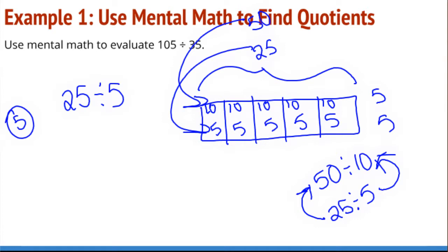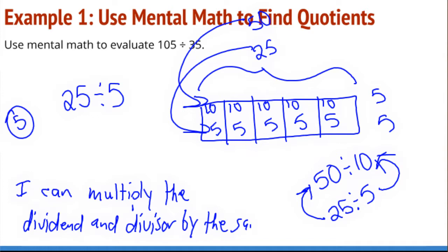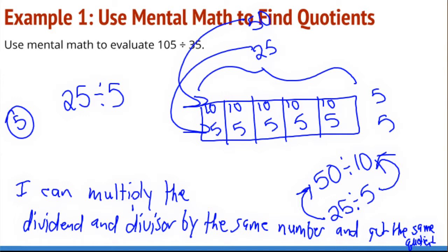So if we were to put this into a conjecture form, we would say something like: I can multiply the dividend and divisor by the same number and get the same quotient. So if I take the dividend and divisor and multiply them both by the same number, I will get the same quotient.